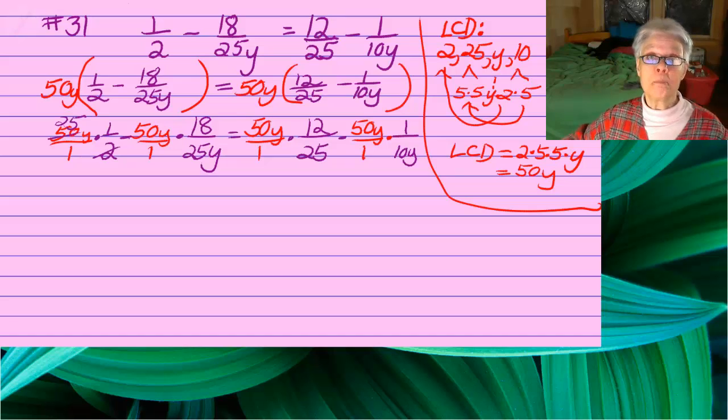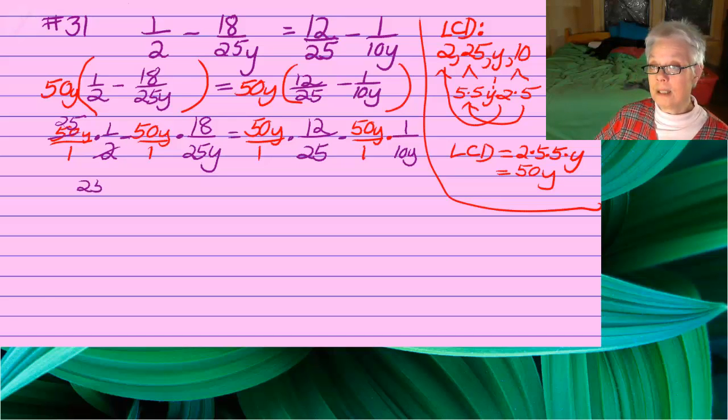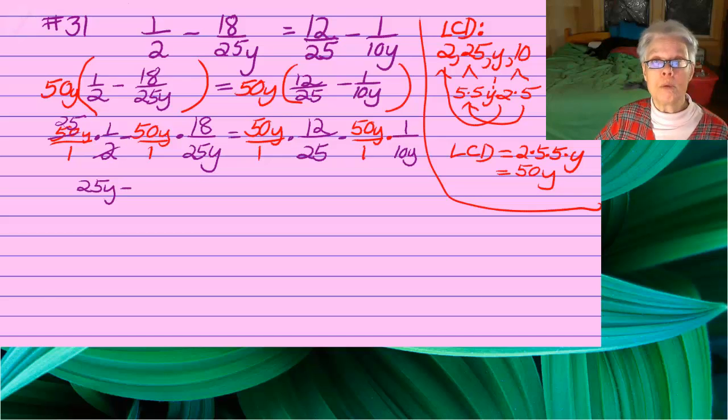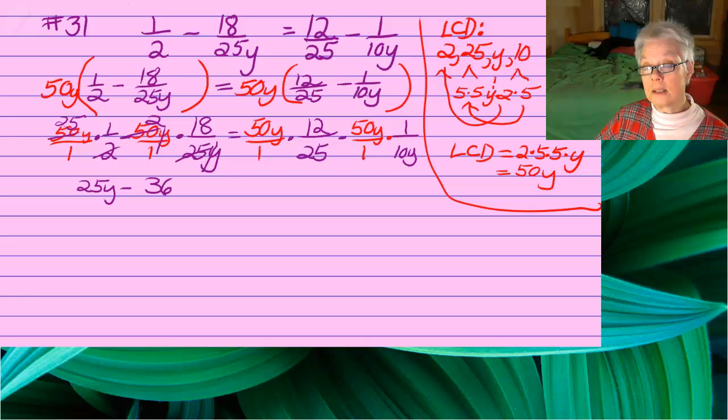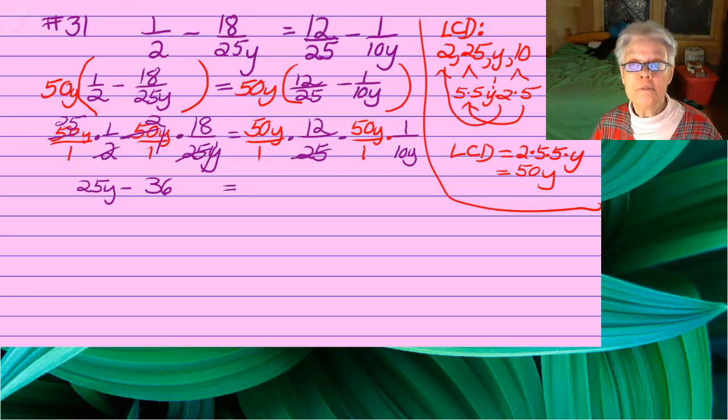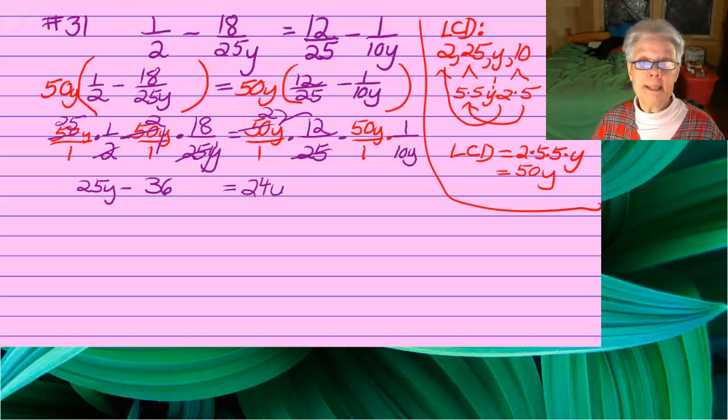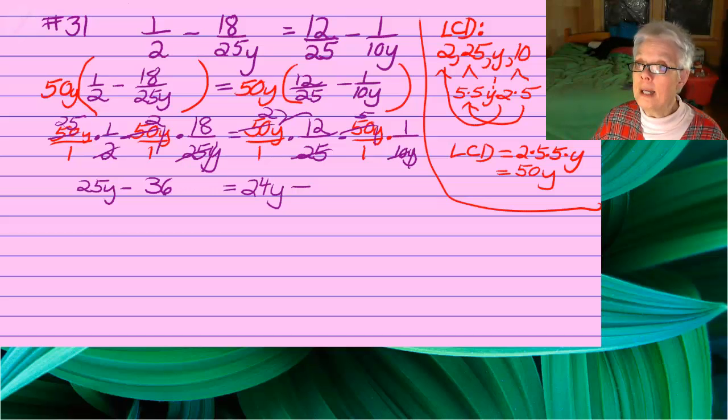Now we're going to have a canceling party. Cancel and write what's left below. In the beginning, 2 goes into 50 25 times, so we'll have 25y. Then 25 goes into 50 two times. The y's cancel, so 2 times 18 is 36 equals, well, in the same way, we're going to have 24y minus 5.